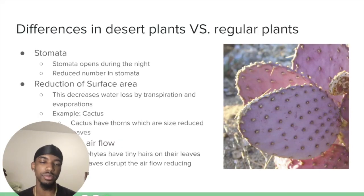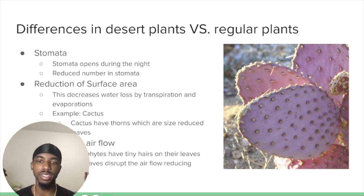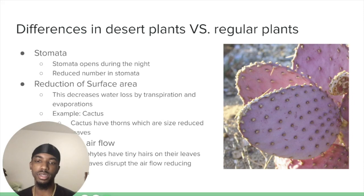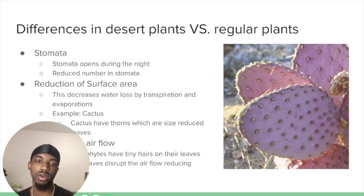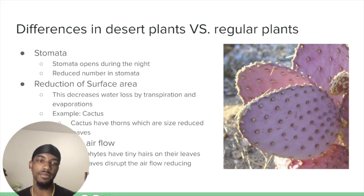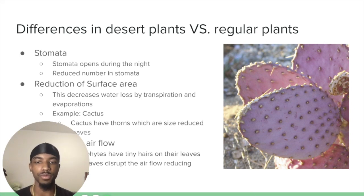The main difference between desert plants and regular plants is their stomata. Desert plant stomata open during the night to conserve water loss, and they also have a reduced number of stomata. Their leaves are also very small compared to regular plants, and this reduced surface area decreases water loss through transpiration and evaporation. For example, a cactus has thorns, which are extremely reduced-sized leaves that allow them to prevent water loss at a higher rate than regular plants.